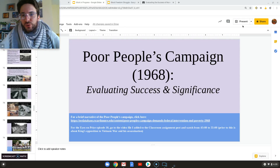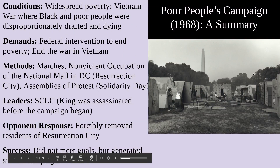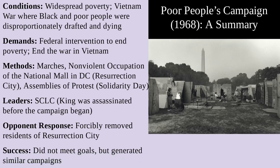The Poor People's Campaign is a response to widespread poverty and the Vietnam War, where Black and poor people were disproportionately drafted and dying, while upper middle class and wealthier white folks were disproportionately not drafted and not in the most dangerous situations in Vietnam. This is occurring during a time of anti-war protests. The demands of this campaign are a federal intervention to end poverty and an end to the war in Vietnam.